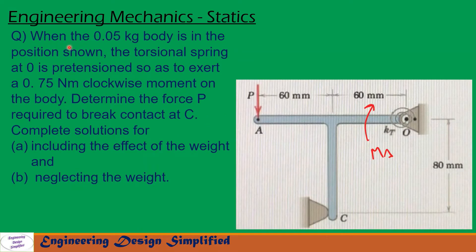Today's problem: when the 0.05 kg body is in the position shown, the torsional spring at O is pre-tensioned so as to exert a 0.75 Nm clockwise moment on the body. Determine the force P required to break contact at C. Complete the solution for: A, including the effect of the weight, and B, neglecting the weight.